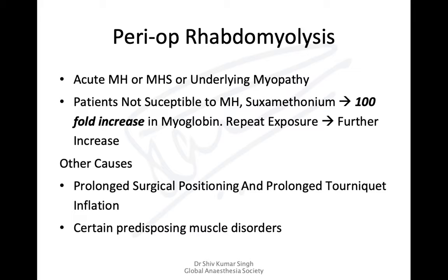Rhabdomyolysis can occur in acute MH or in MH-susceptible patients with underlying myopathy, and also in patients not susceptible to MH. In susceptible patients, succinylcholine leads to almost 100-fold increase in myoglobin, with further rises on repeated exposures. Other causes of rhabdomyolysis include prolonged surgery, tourniquet time greater than two hours on a lower limb, and certain muscle disorders.